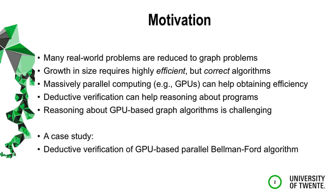Many real-world problems are modeled as graphs and the increase in the size of graphs requires us to design highly efficient algorithms on one side and also correct algorithms on the other side. To obtain efficiency we can use modern many-core hardware like GPGPU hardware where we can parallelize algorithms, and we can also use deductive verification techniques to reason about correctness of programs. In this case study we show how to verify a GPU-based shortest path Bellman-Ford algorithm.